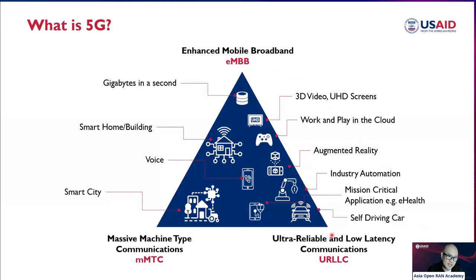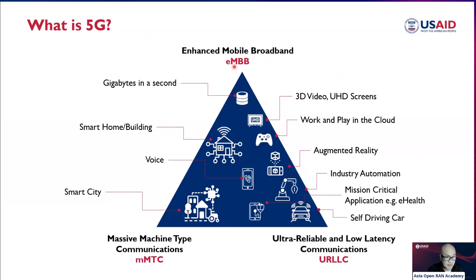You can also see intersections between the use cases — between MMTC and URLLC, MMTC and EMBB, and a combination of all three. The three major use cases of 5G are EMBB, MMTC, and URLLC.